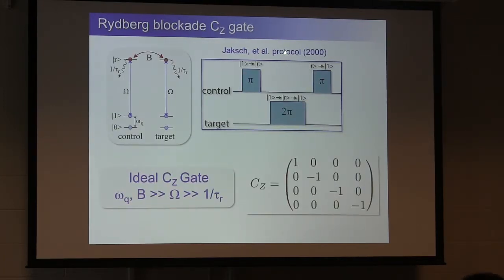So when we go back to the original gate proposal of the Jaksch paper, which I think everyone here is familiar with, but let me just remind you once more, so we have two qubits coupling up to the Rydberg state with the interaction strength on the order of B. We do a pi, 2 pi, pi sequence, and in the ideal limit, where the qubit frequency and the interaction strength are large compared to the excitation strength, which in turn is large compared to the 1 over lifetime decay rate from the Rydberg state, we get this ideal phase gate.